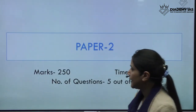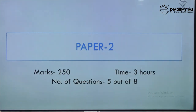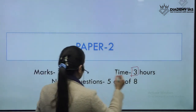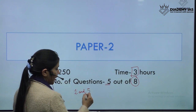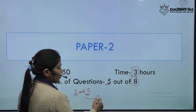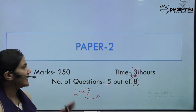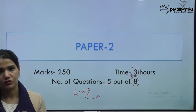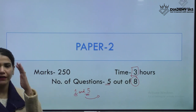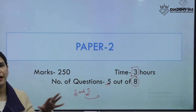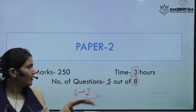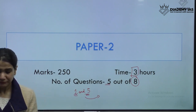Let's move on to Paper 2. In Paper 2, it is again 250 marks in total, with a time duration of three hours. There are eight questions and you have to attempt any five — just like in Paper 1, question numbers one and five are compulsory questions and the others are your choice. You have to attempt the other three questions from both sections, so at least one question is selected from each section.